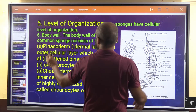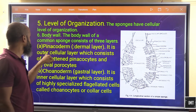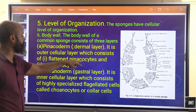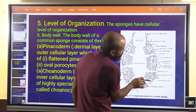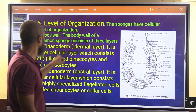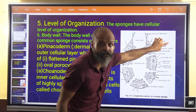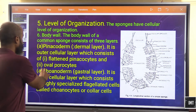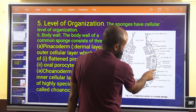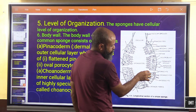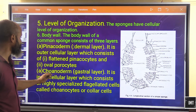The body wall of a common sponge consists of three layers. The first is the pinacoderm — the dermal outer cellular layer consisting of flattened cells called pinacocytes. It also contains oval-shaped porocytes, which are the cells forming the pores through which water and materials enter.